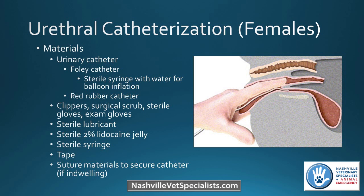For females, things can get a little trickier. Materials are similar — you'll most often use a Foley catheter, though a red rubber can also be tried.